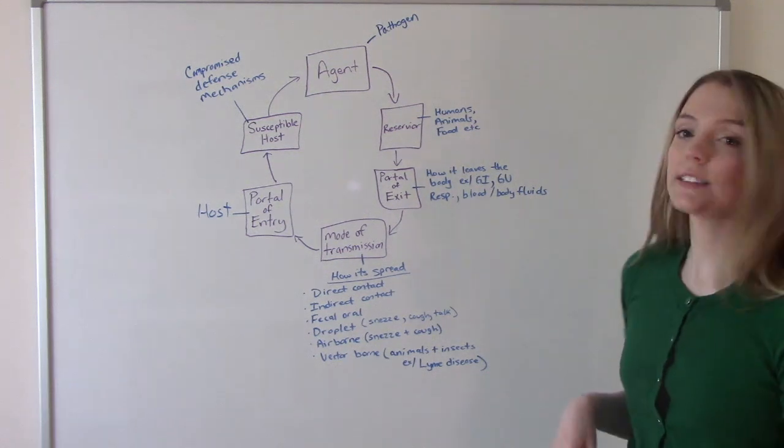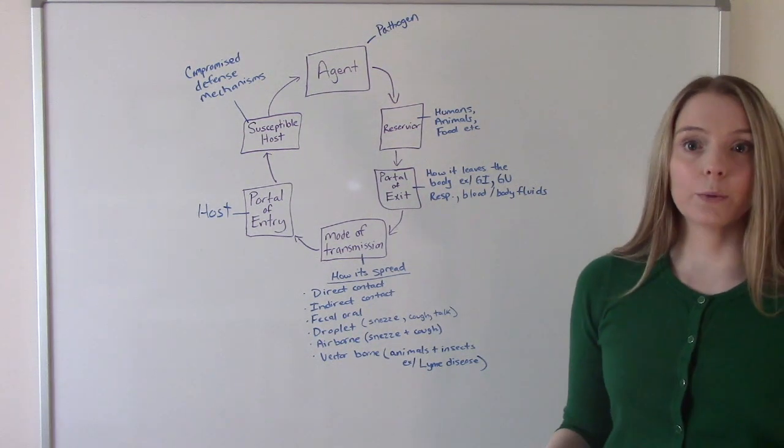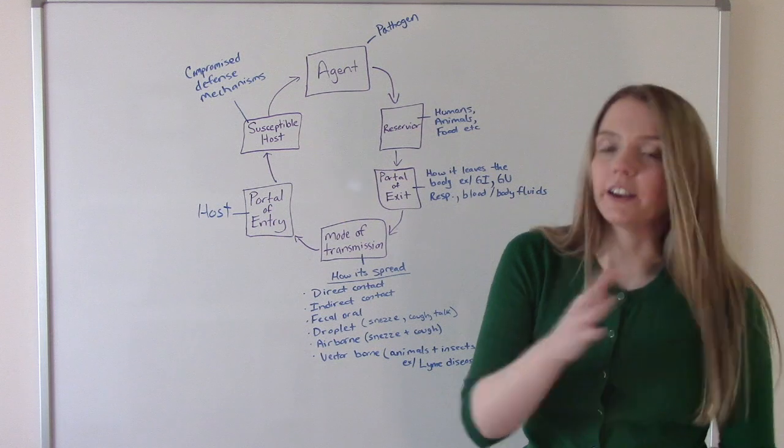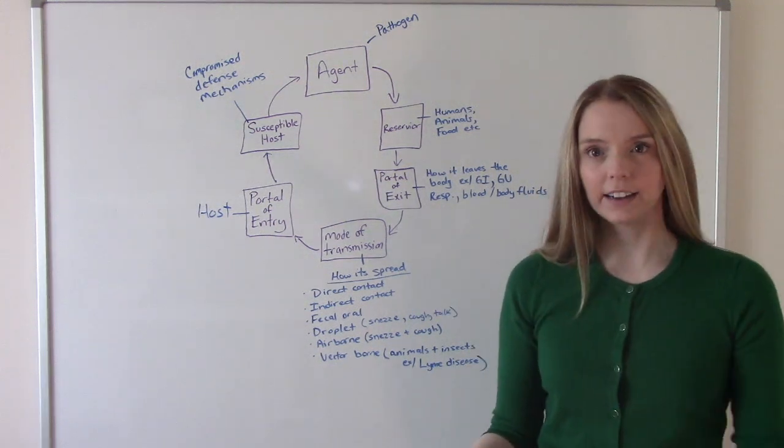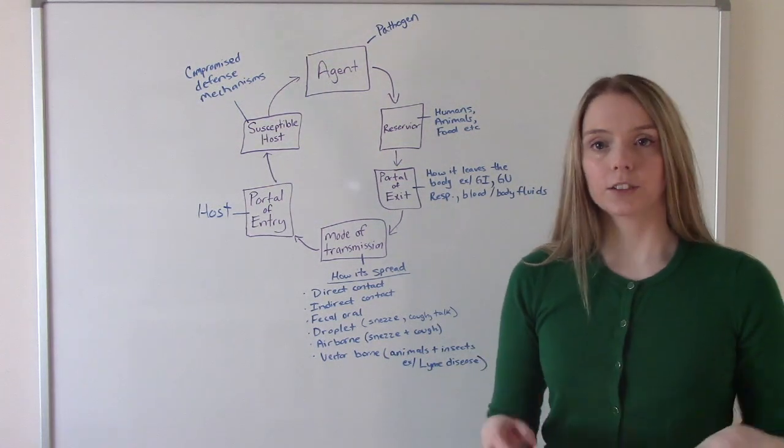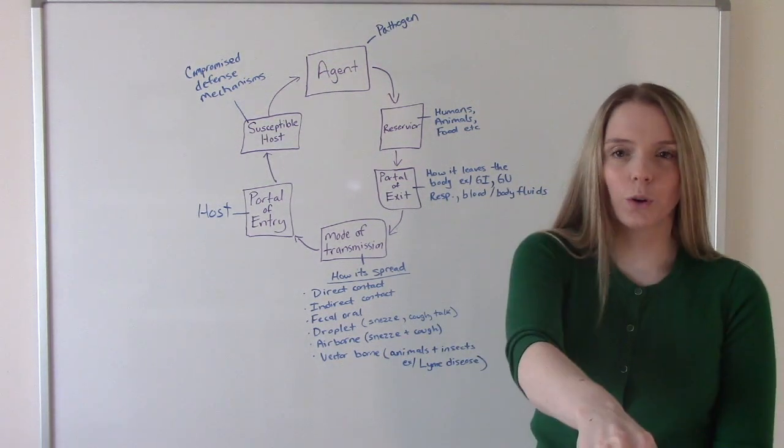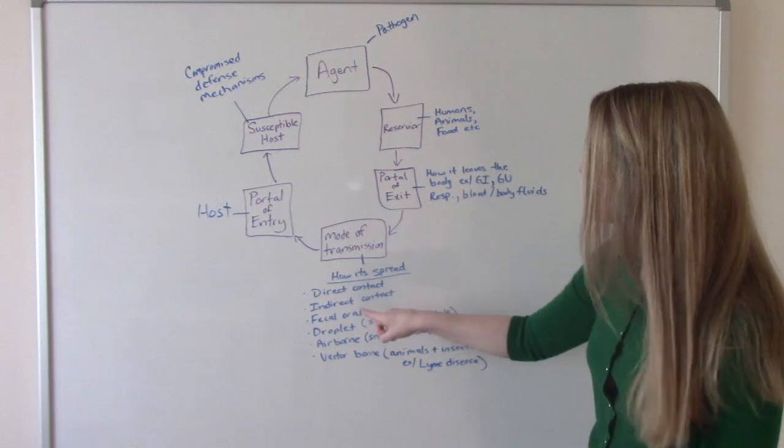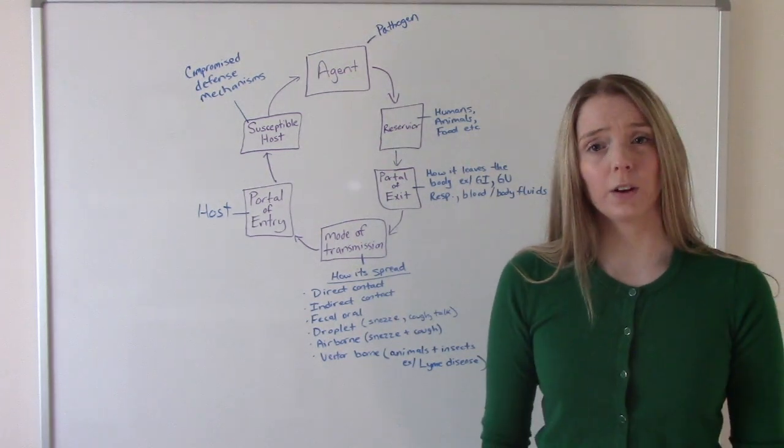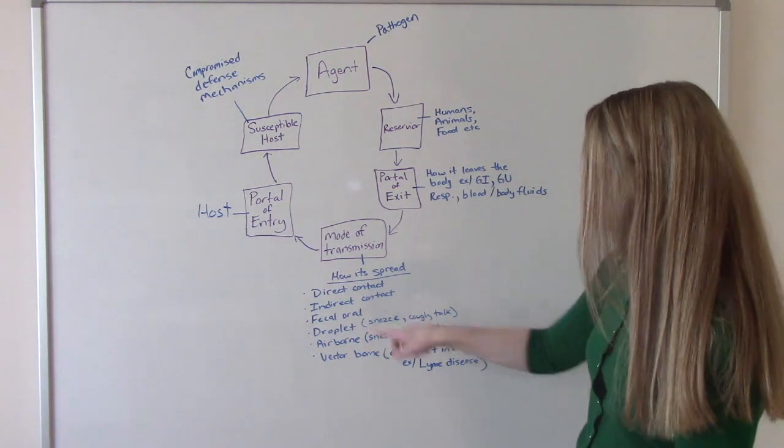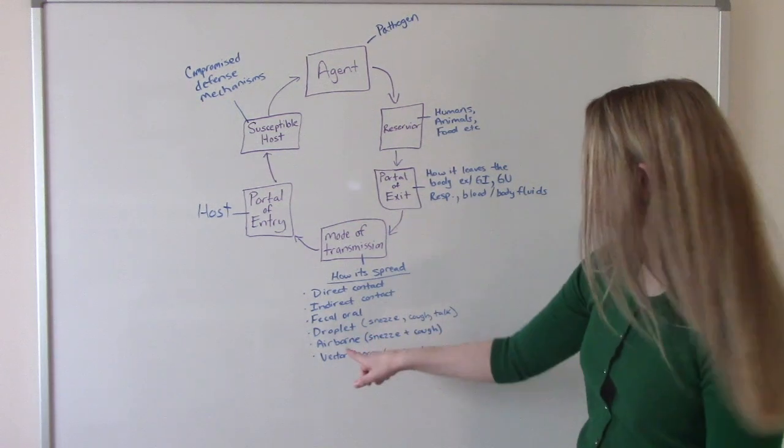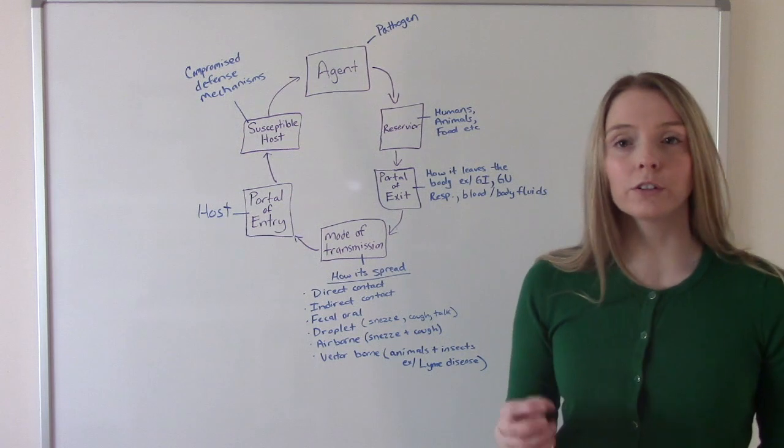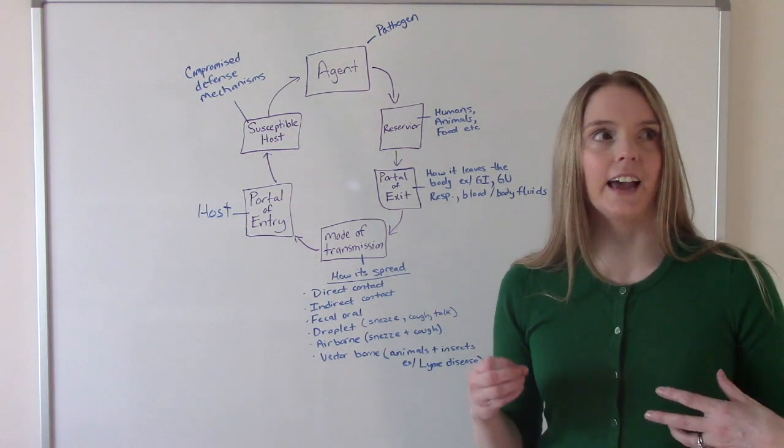It needs a mode of transmission, how we're going to spread it to other people. Direct contact is person to person - sneeze in your hand and shake somebody's hand. Indirect contact is object to person - sneeze in your hand, touch a doorknob, and then somebody else touches that doorknob. The fecal-oral route is not washing your hands after you go to the bathroom. Droplet is sneezing, coughing, or talking. Airborne is sneezing or coughing. And vector-borne is through animals or insects, like Lyme disease.